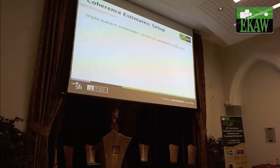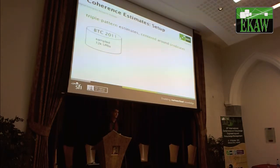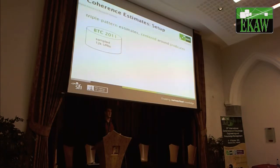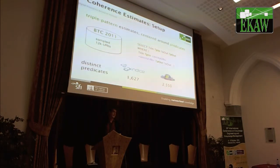We decided to go for triple pattern estimates. For each triple pattern, we collect statistics and compute a coherence measure for an endpoint or store. We centered these around predicates, so we have statistics only for triple patterns with a constant in the predicate position. For the experiment, we used the Billion Triple Challenge dataset. We assembled 12,000 URIs from different domains in a random way, and used an entity query that asks for all information where an entity appears in the subject and object position, substituting the entity URI with the sampled URIs. This allows us to have ingoing and outgoing coherence measures.